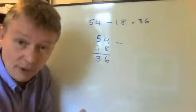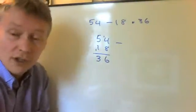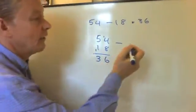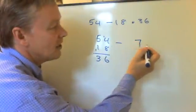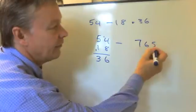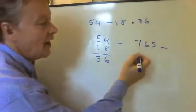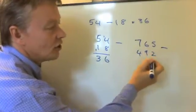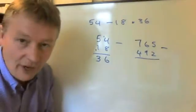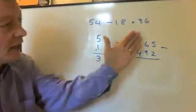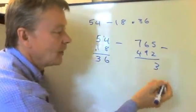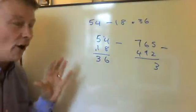And this method, which has been around for a little while now, works perfectly well with also larger numbers. So it might be that I've got a question like 765, and I'm going to take 492 away from that. Well, again, I take away the units. So 5 take away 2 is 3. There's nothing to carry on, and that's quite easy for me.